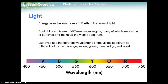We need to talk about light when we talk about photosynthesis. Energy from the sun travels to the earth in the form of light. Sunlight is a mixture of different wavelengths, many of which are visible to our eyes and make up the visible spectrum. We can see the visible spectrum wavelengths, but not ultraviolet, x-ray, or radio waves. Our eyes see different wavelengths of the visible spectrum as different colors: red, orange, yellow, green, blue, indigo, and violet.